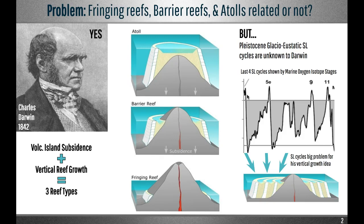This single fall-and-rise assumption is the fatal flaw in Darwin's subsidence model, because an ice age with multiple glacial cycles would produce a barrier reef every time sea level rose at the end of each cycle. This would generate multiple barrier reefs around the same volcanic island, instead of the single barriers we see today. In other words, Darwin's vertical growth mechanism is untenable during glacial cycles.